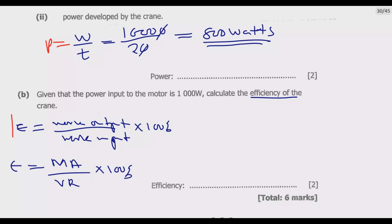Efficiency will be: the input is 1000 watts, the output is 800 watts, then multiply by 100 percent. So it will be 800 divided by 1000 times 100 percent, which gives us 80 percent. Once you do that, you get these two marks and six marks in total.